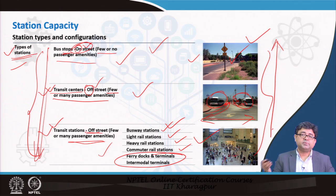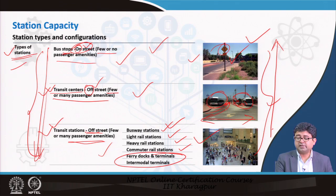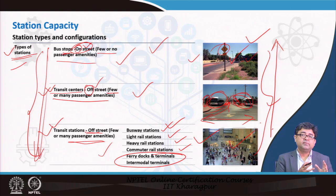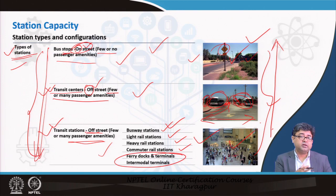The cost of building these stations is also very different. A basic bus stop is the easiest and cheapest — you just need a sign post. A transit center needs a little bit more infrastructure because it is off-street: you have to develop a pavement, loading areas, and some passenger amenities. A transit station may be the most costly to build.